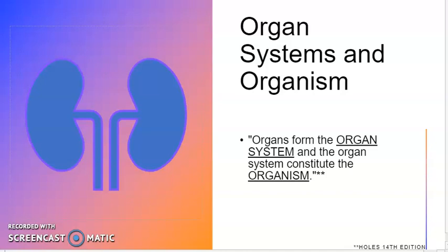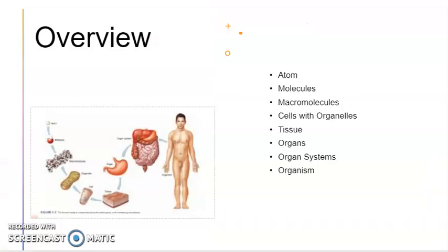An organism is a complete life form. As an overview, the levels of organization range from atoms, molecules, macromolecules, cells with organelles, tissues, organs, organ systems, and organisms.